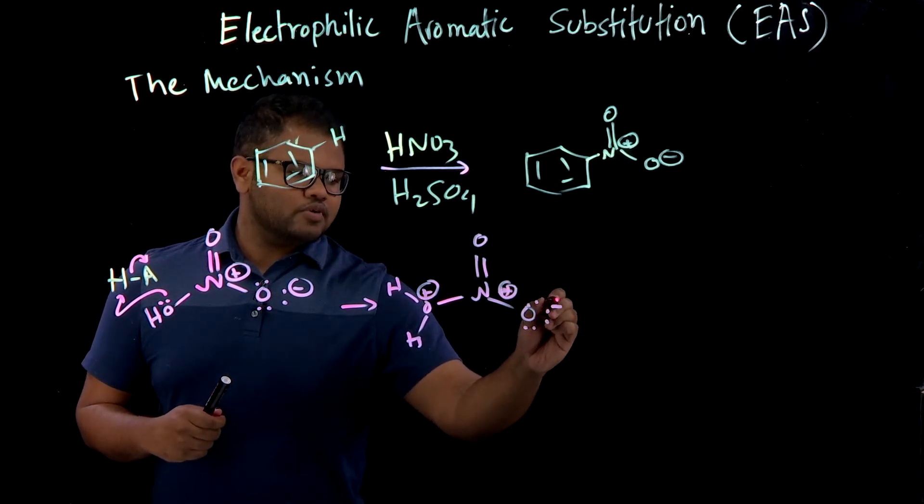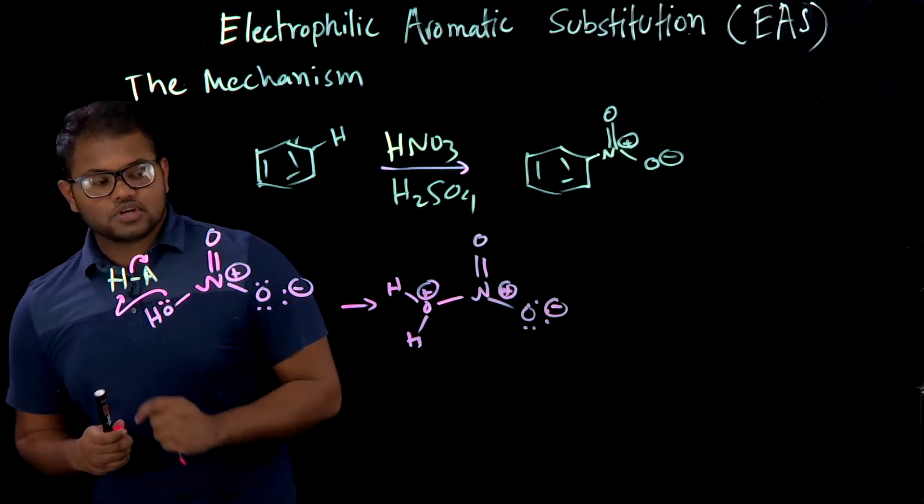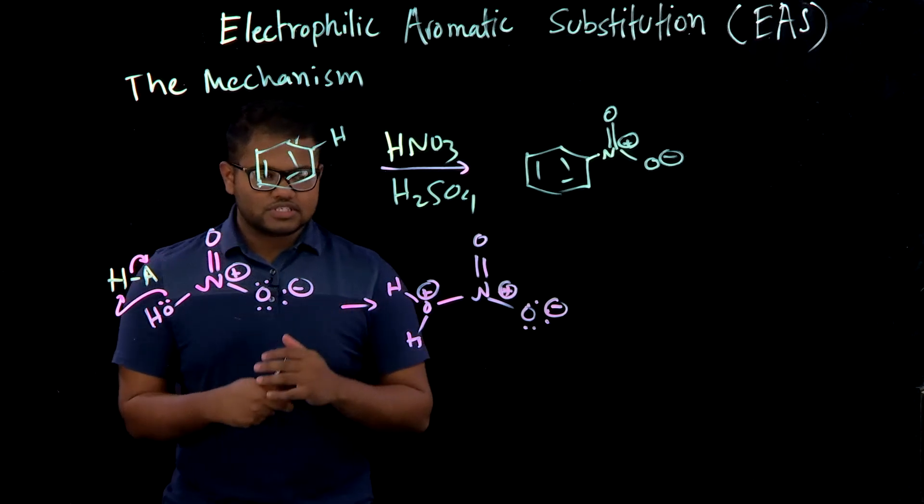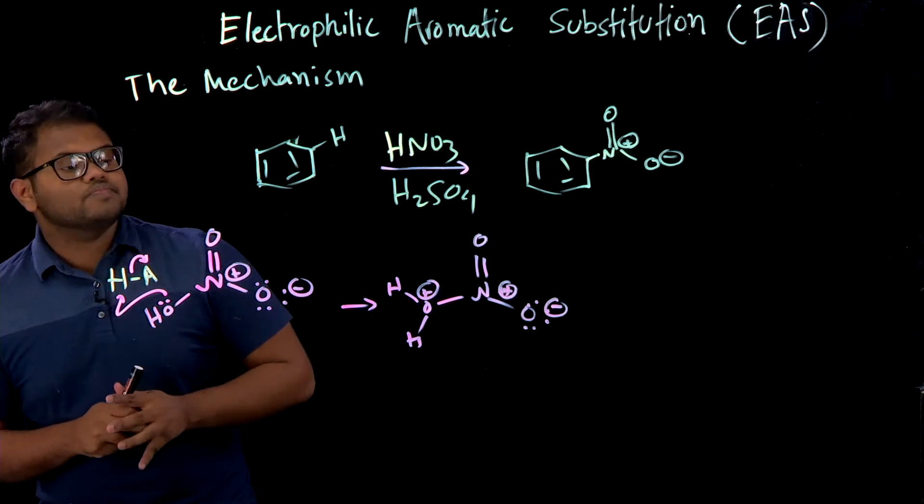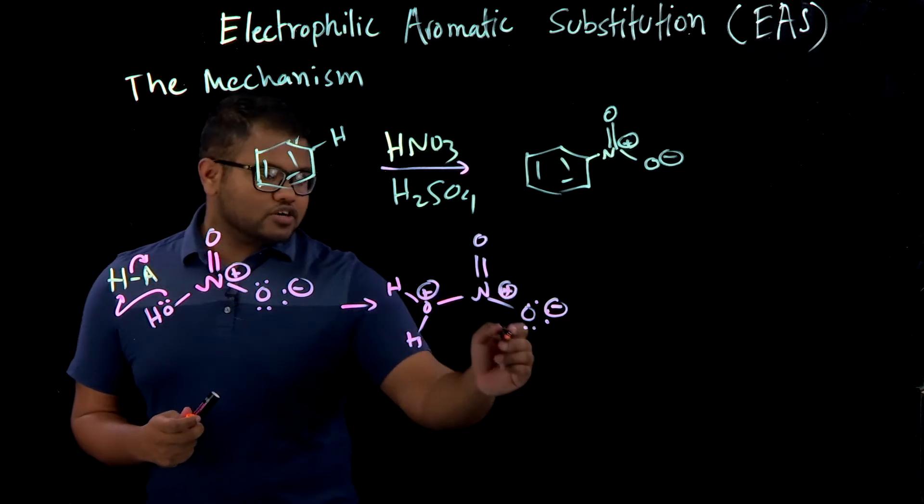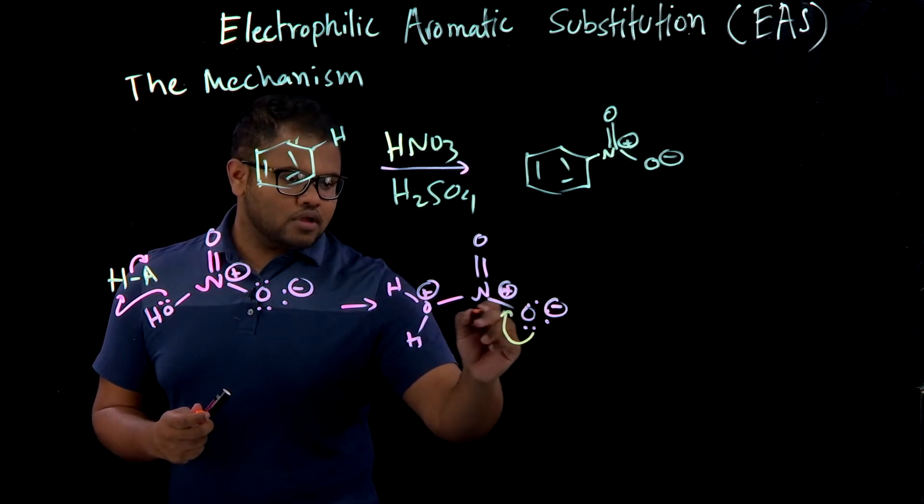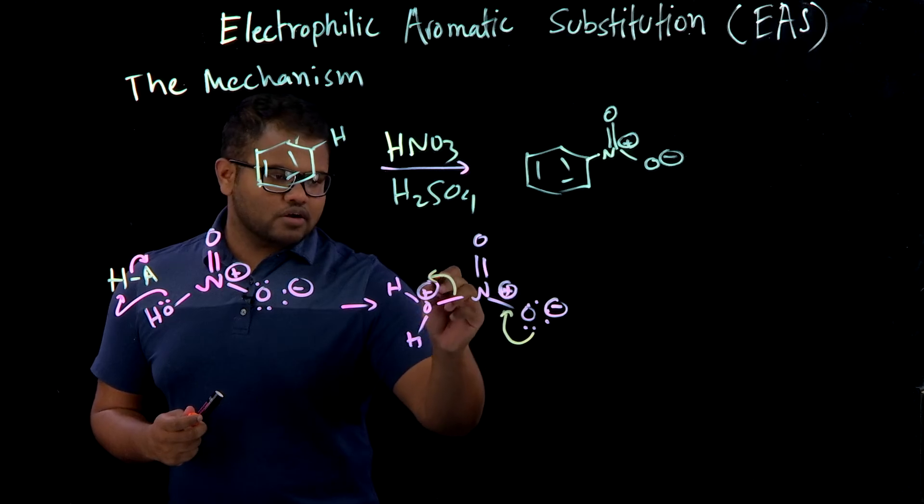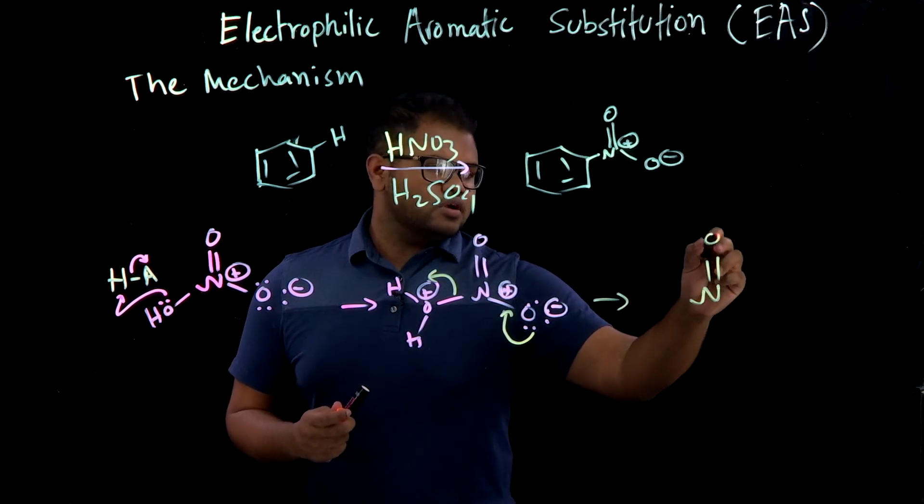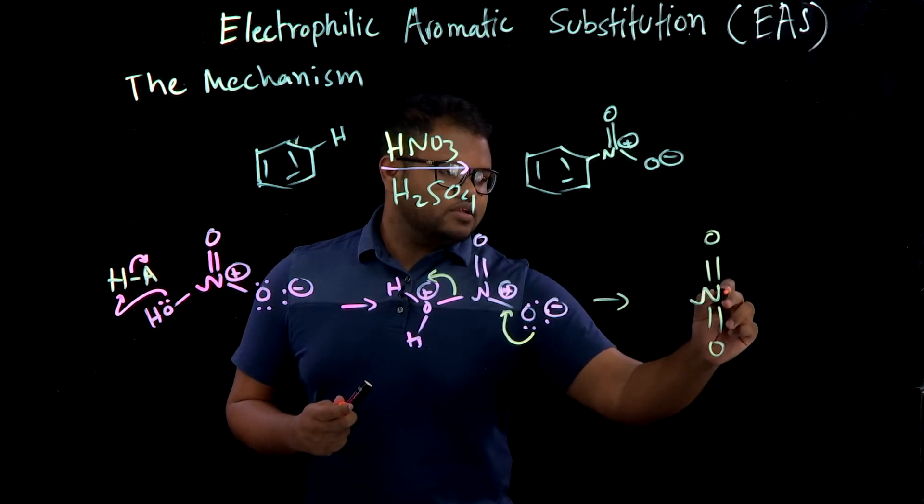And this is probably the only time in organic chemistry you're going to see two positive charges next to each other. It's usually really bad and you don't want to see it, but in this case it's an exception. So what happens is now you just made this OH2 into a really good leaving group. So these electrons could come down and push up the water and you get this super electrophilic nitronium ion.